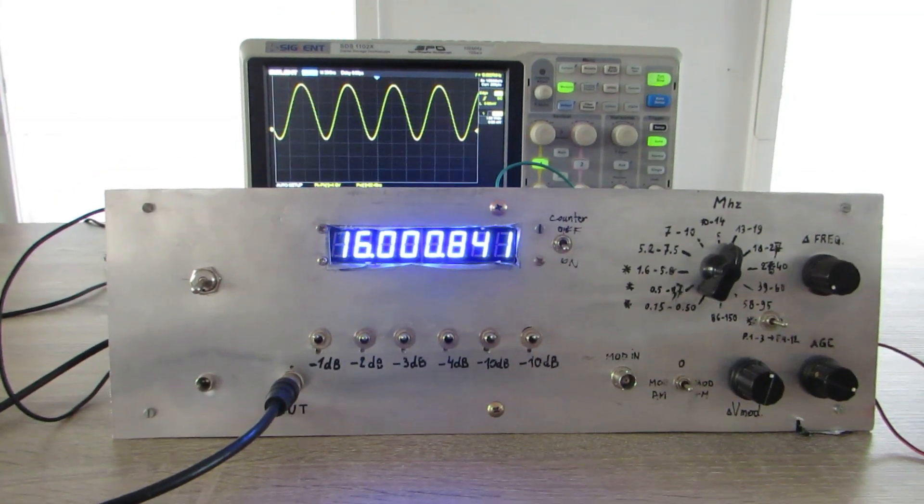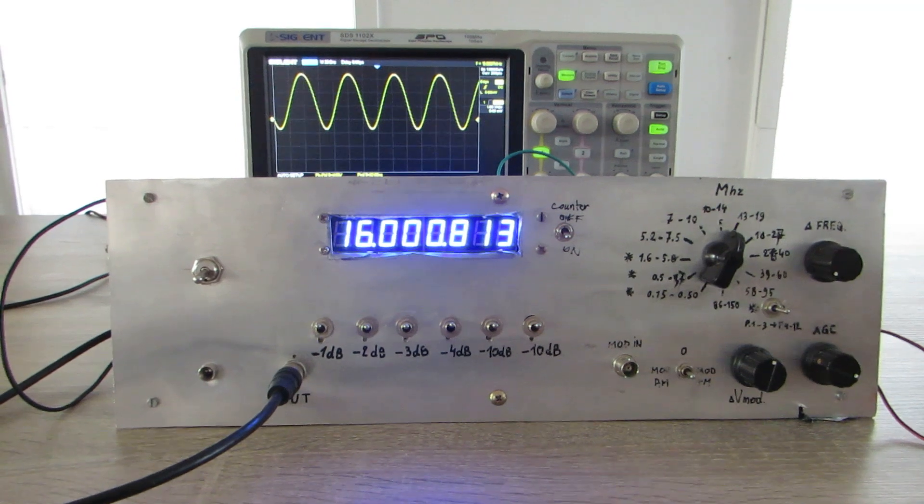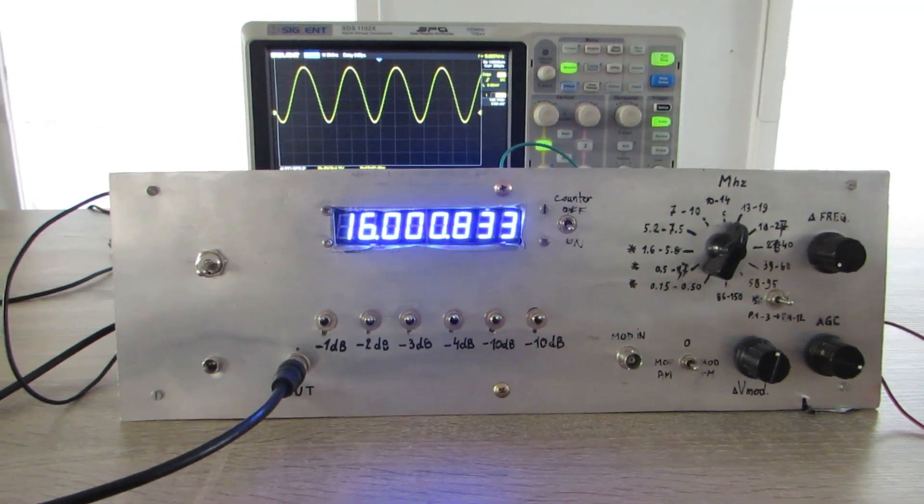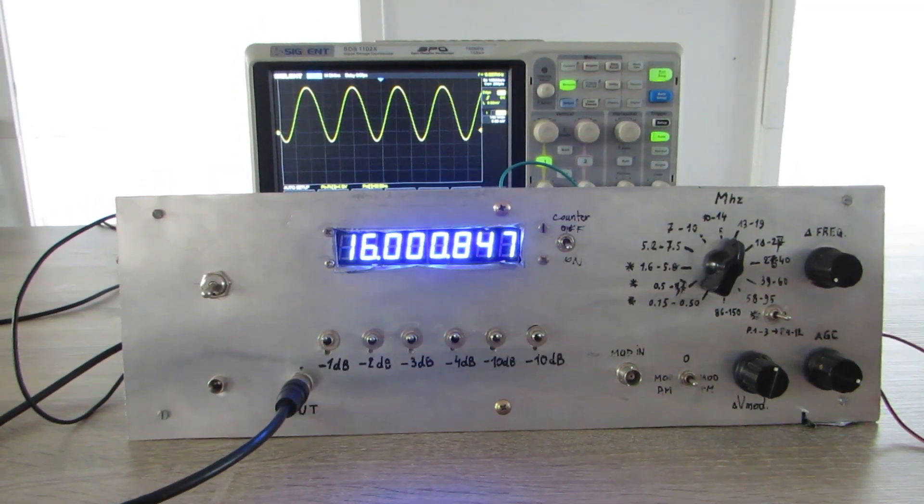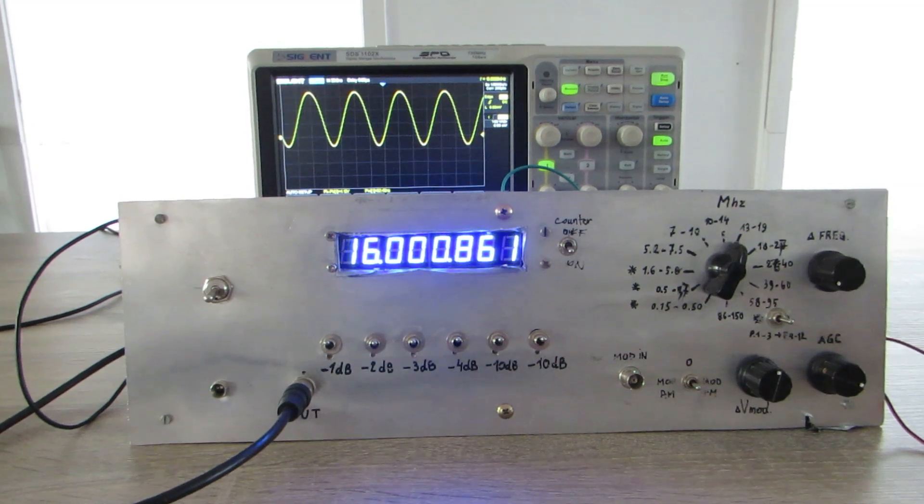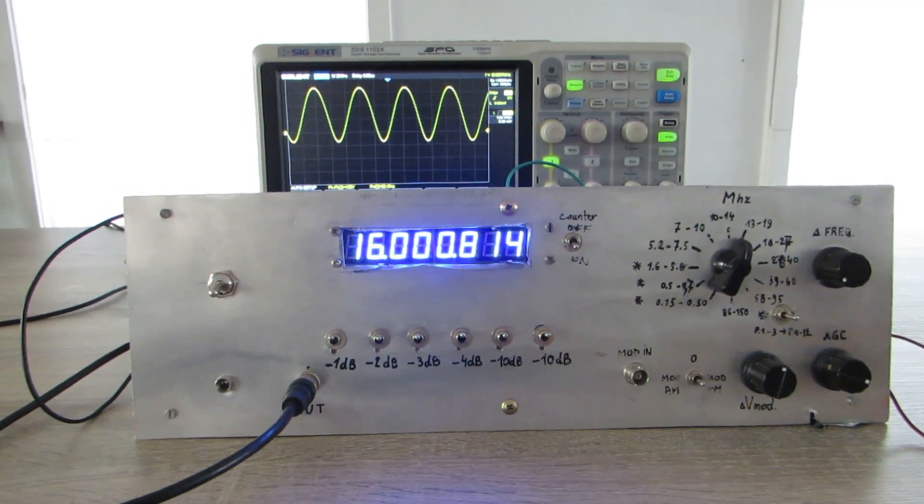At first I used only one transformer to provide both the 12V DC and the 9V DC for the display. When trying it out, I saw that there were fluctuations in the voltage and therefore also in the frequency of the generator.